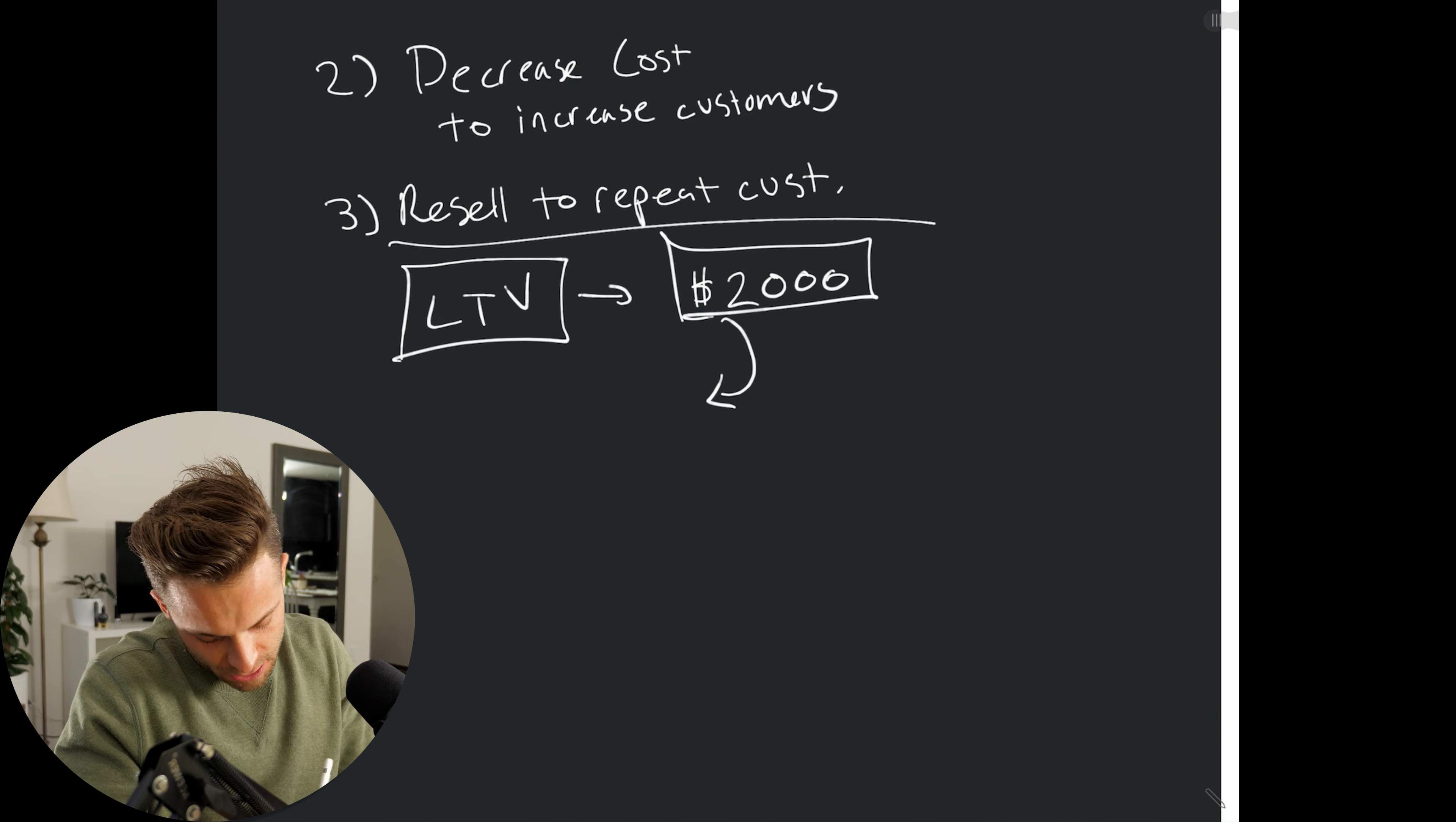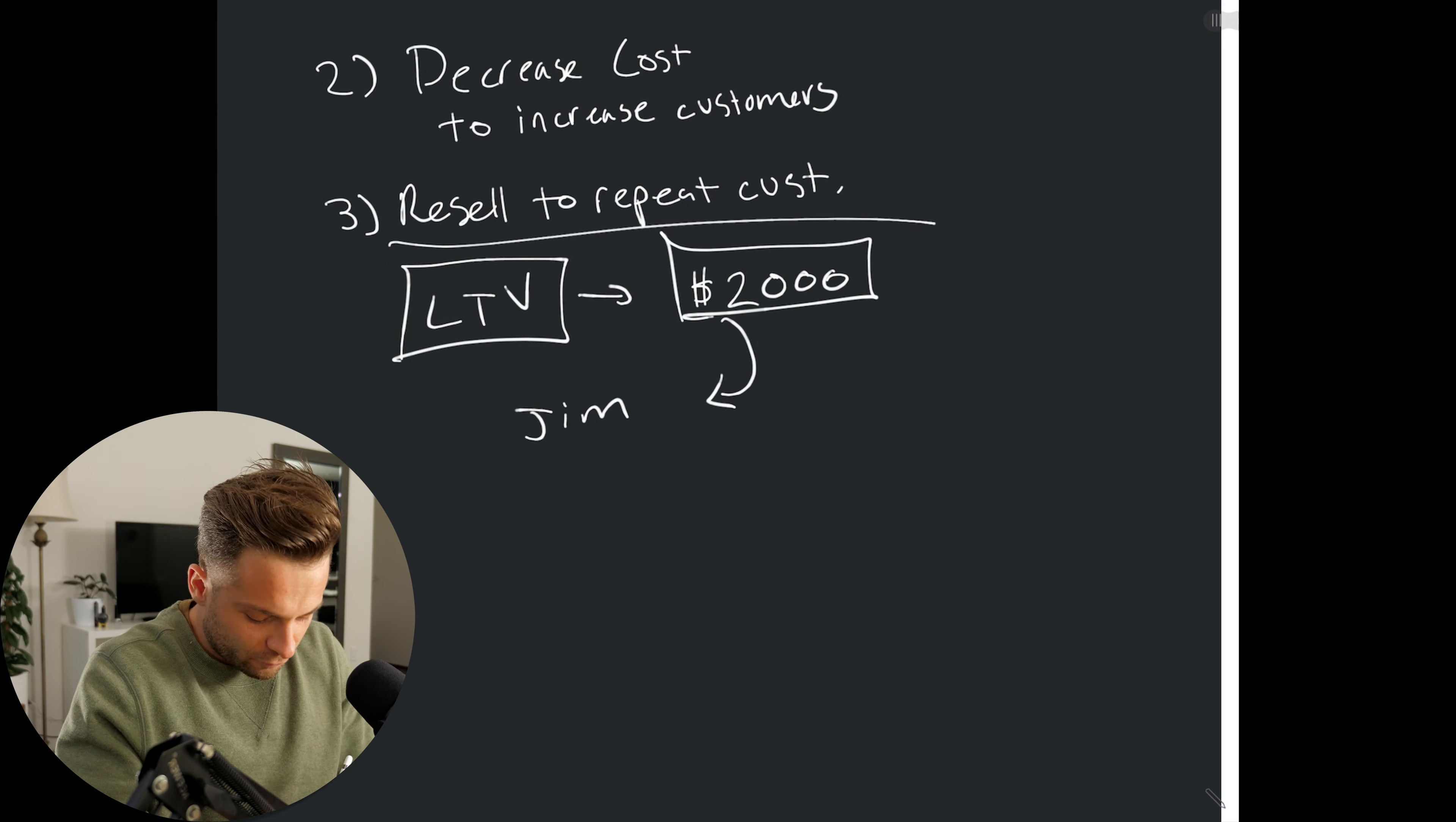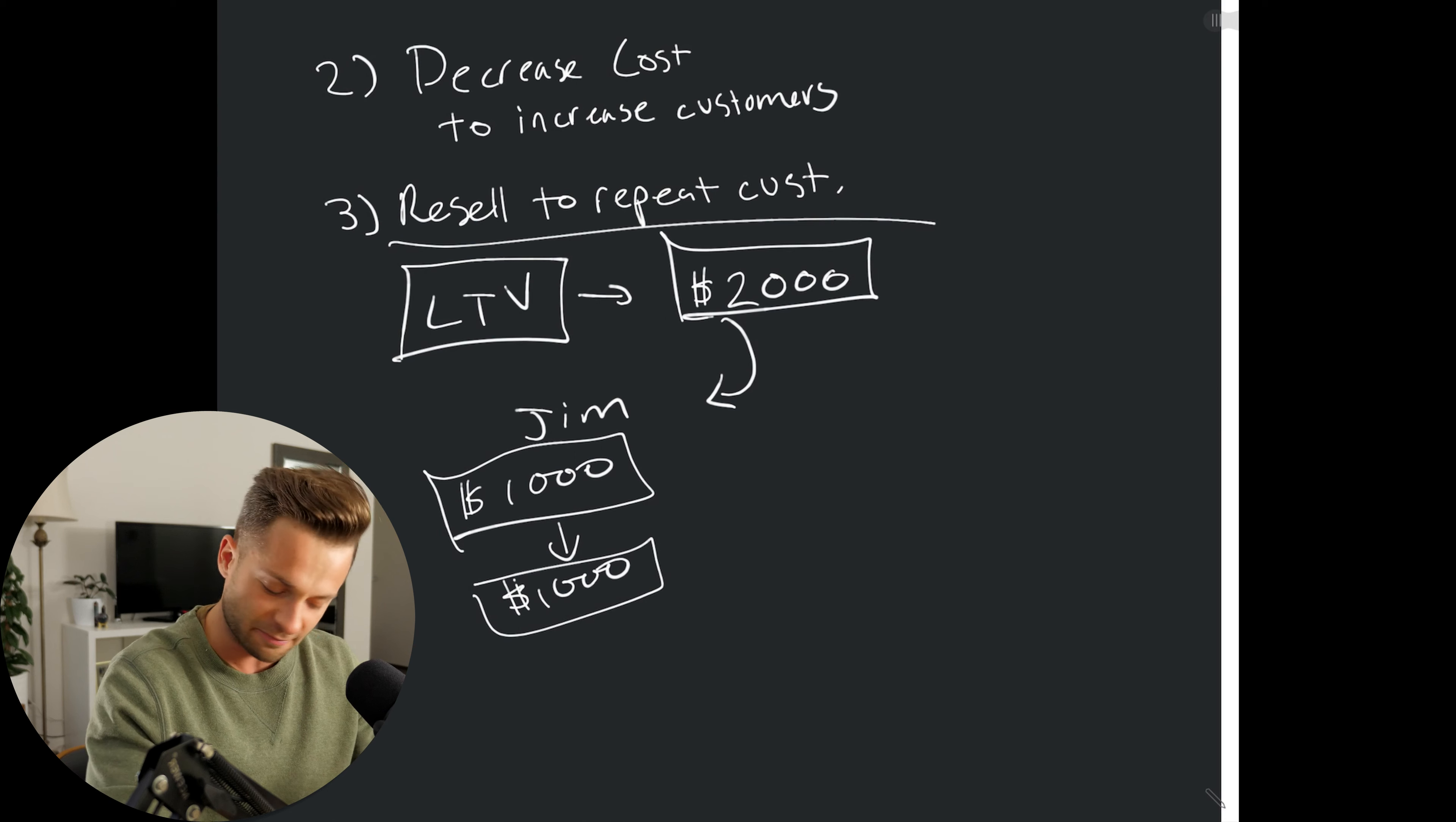Now, Jim just shoots weddings. So, he can afford to spend, let's say, $1,000 to acquire a client and that'll still leave him with $1,000 profit. And Jim is doing okay. He's making some money. This is all right.